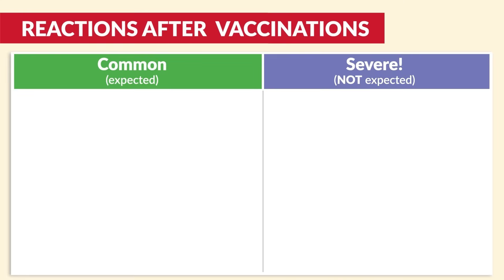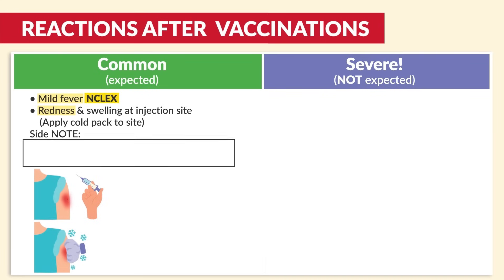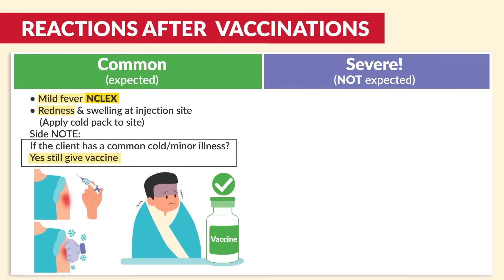Switching gears to reactions after vaccinations. Some common, to-be-expected reactions include a mild fever — be sure to write that down, huge NCLEX tip — as well as redness and swelling at the injection site; we always apply a cold pack to the site. If the client has a common cold or even a minor illness, we still give the vaccine — a big test tip. Many students did not want to give the vaccine, but we still give it for a common cold and a minor illness.